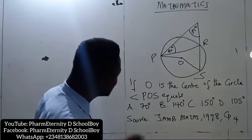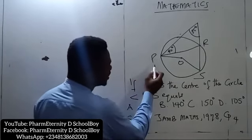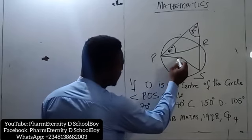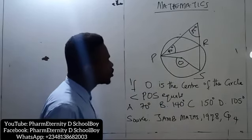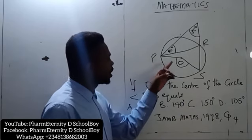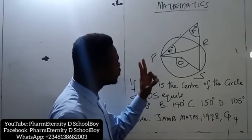Now let's go back to the diagram. If you look at this diagram, the angle in question is POS. This is the angle we are looking for. And for us to be able to get this angle, we are going to take two steps.